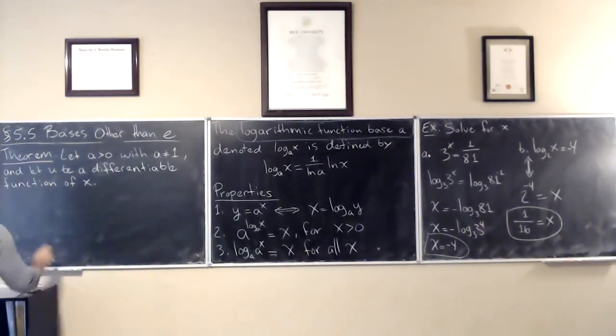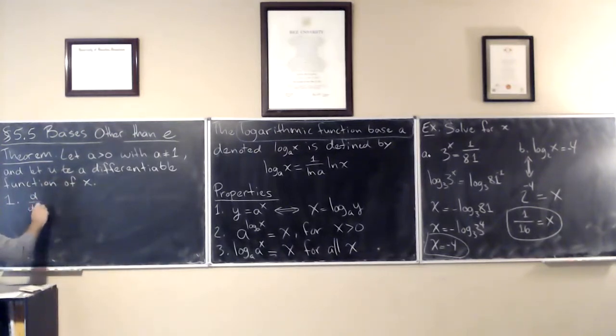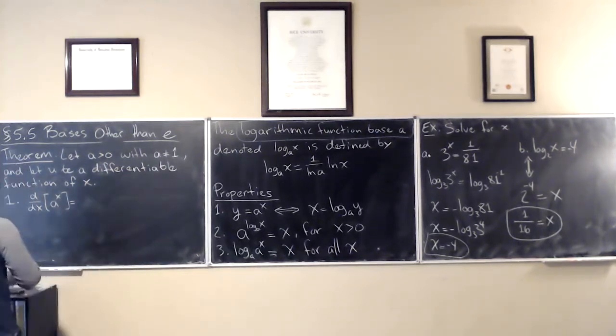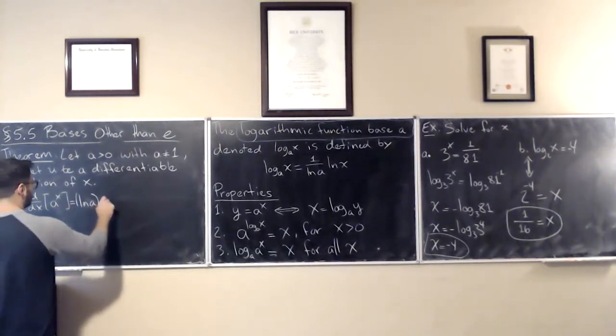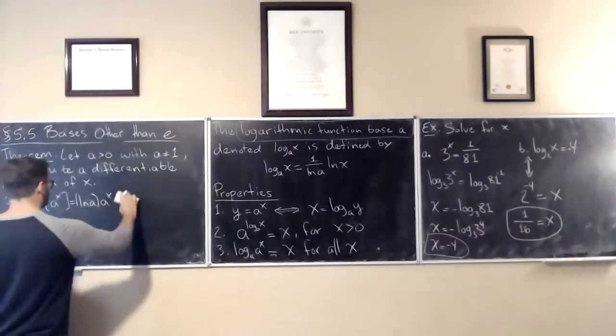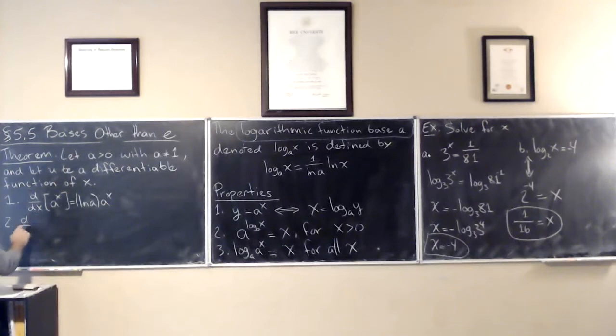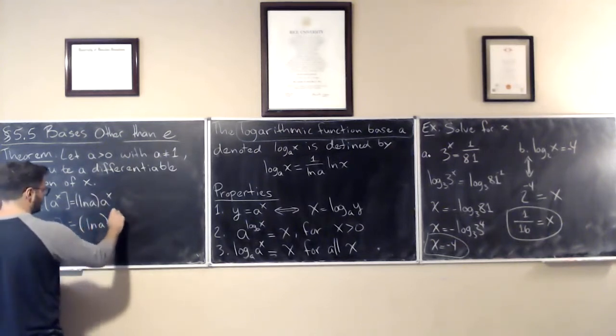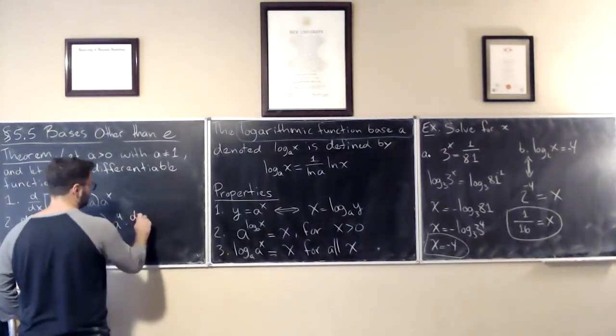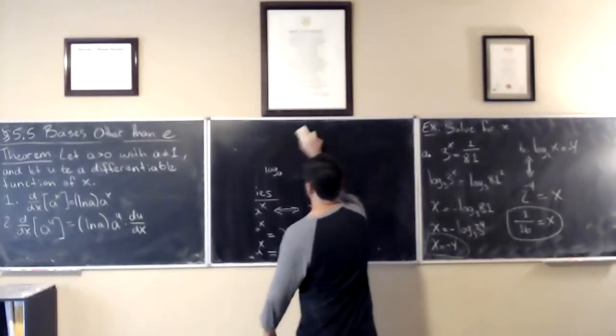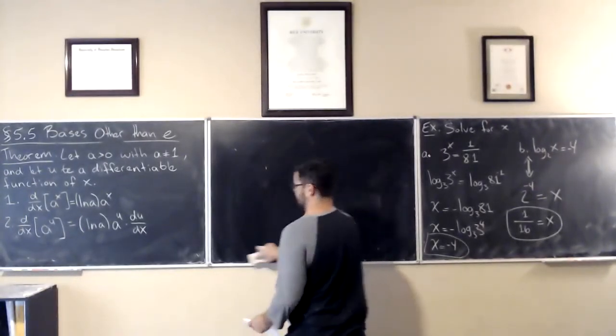Okay, so what are the parts here? One: the derivative with respect to x of a to the power of x is equal to natural log a times a to the power of x. And the u version is natural log of a times a to the power of u times du dx.